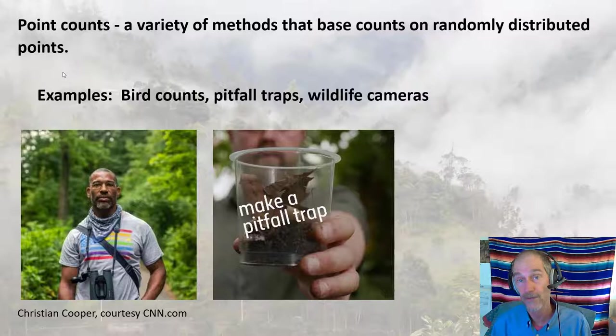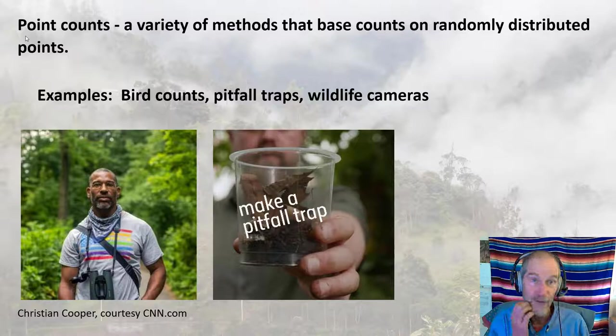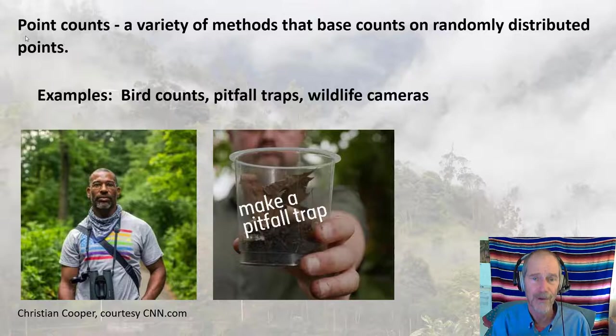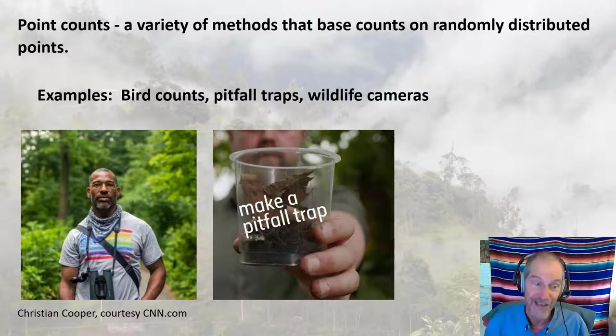So we've got quadrat-based sampling, which includes transects. Another approach is point counts. Sometimes you can't put quadrats down because birds all fly away. So there's a variety of methods that base counts on randomly distributed points rather than randomly distributed quadrats. Examples include bird counts, pitfall traps, and wildlife cameras.